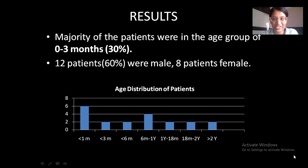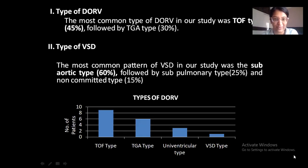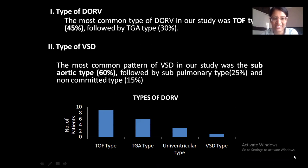Results: The majority of patients were in the age group of 0 to 3 months, followed by the age group of 6 months to 1 year. 12 patients were male and 8 patients were female. The most common type of DORV in our study was the TOF type in 45% of patients, followed by the TGA type in 30% of patients. The most common pattern of VSD was the sub-aortic type in 60% of patients, followed by sub-pulmonary type in 25% and non-committed type in 15%.